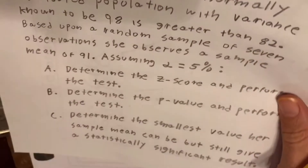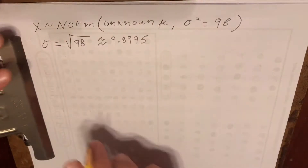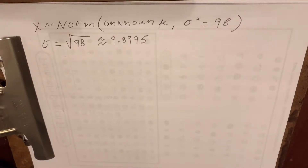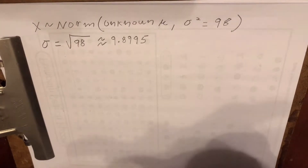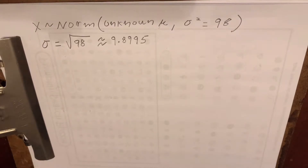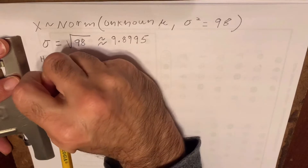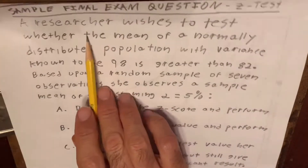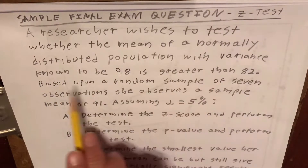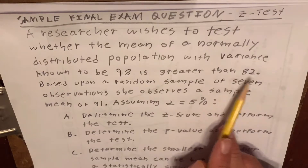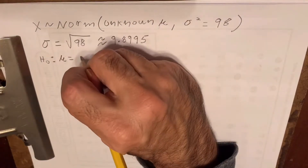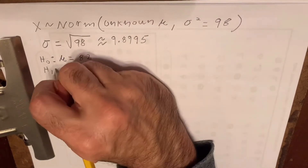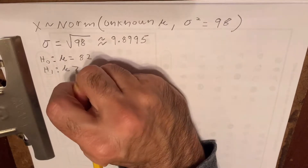Part A says: determine the Z-score and perform the hypothesis test. Let's start by writing out the actual hypotheses very carefully, because even if we make a little mistake, writing them carefully can earn partial credit. The null hypothesis is that the population mean equals 82 — that's the hypothesized value — and the alternative hypothesis is that the population mean is greater than 82.